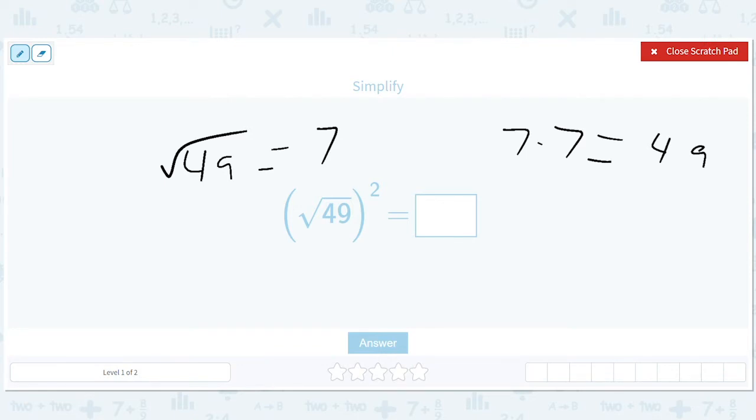If you do one to the other, you cancel them out. So the square root of 49 is seven. Seven squared is 49. So it's like you didn't do anything at all.